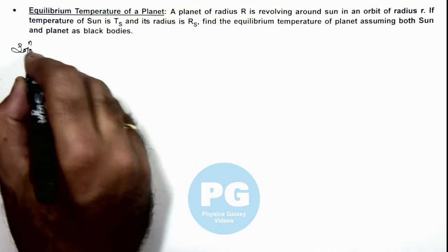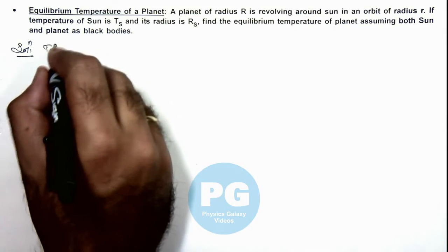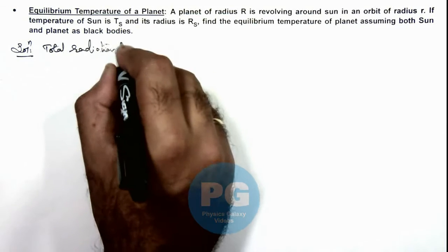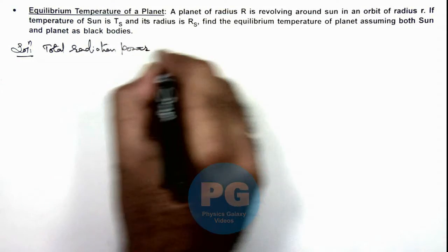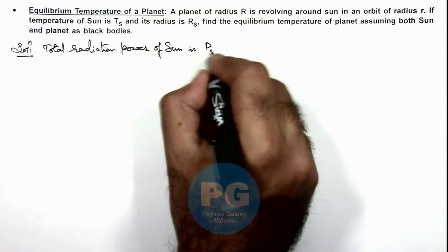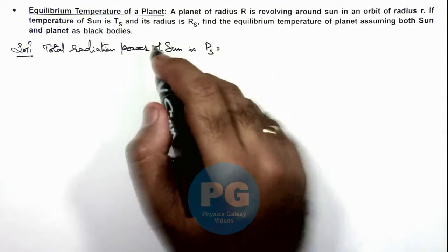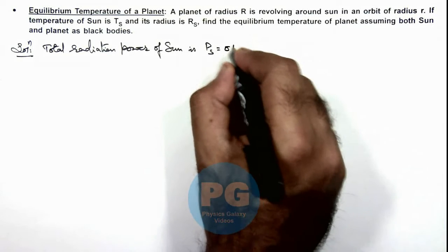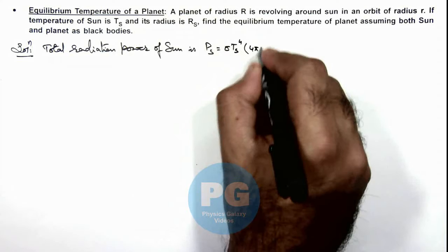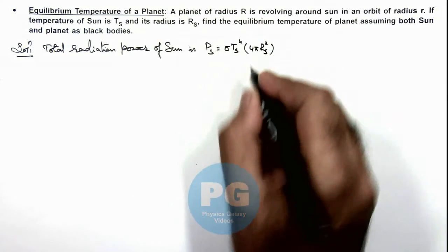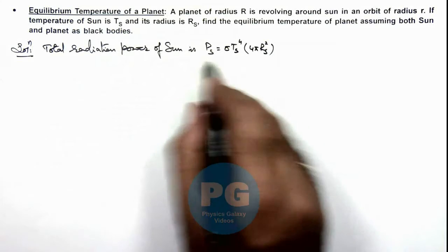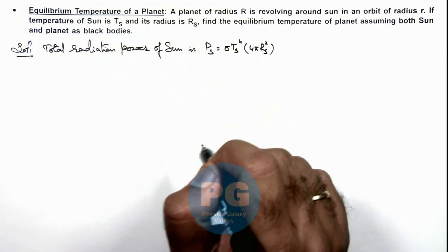In the solution, we can first directly write the total radiation power of the sun. If we consider the sun as a black body, the radiation rate is sigma times Ts to the power 4, multiplied by the total surface area of the sun, which is 4 pi Rs squared, where Rs is the radius of the sun and Ts is its temperature. So this is the rate at which the sun will be emitting radiation energy.